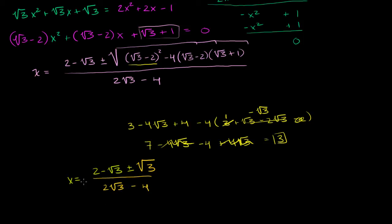Let's try to see what our answers could be. If we go with the plus option, this would be 2 minus square root of 3 plus square root of 3 — the square roots of 3 cancel out — giving us 2 over 2 root 3 minus 4. Dividing the numerator and the denominator by 2, we get 1 over square root of 3 minus 2.